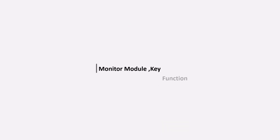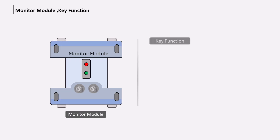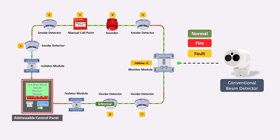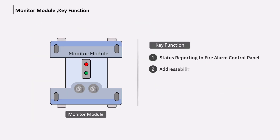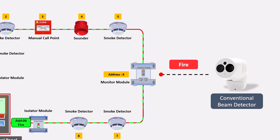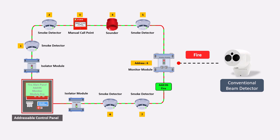Now let's see the functions of the monitor module. First, status reporting to the fire alarm control panel — the monitor module sends the status of connected devices such as normal, alarm, trouble status, open, or short information to the fire alarm panel. Second, addressability — the monitor module has a unique address and the fire alarm panel gets the exact pin location of the connected devices.